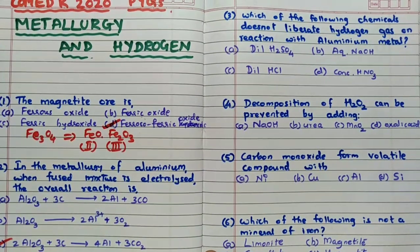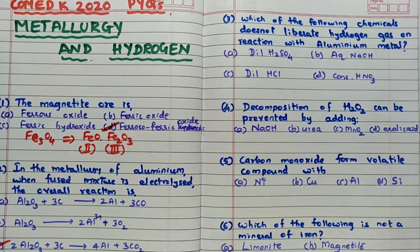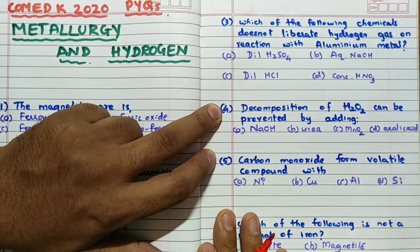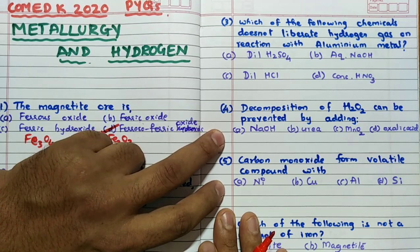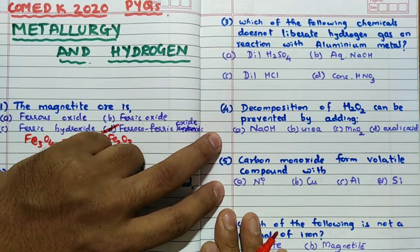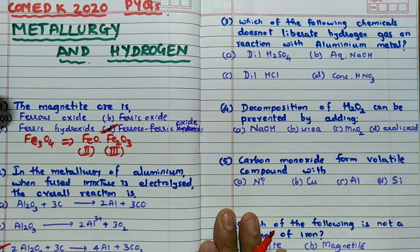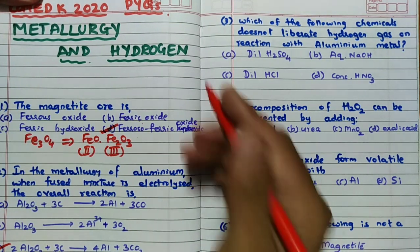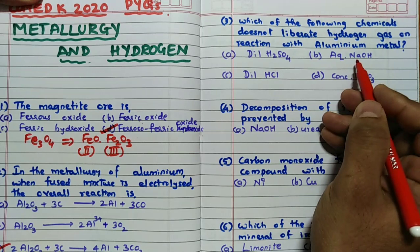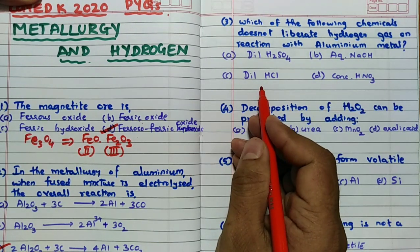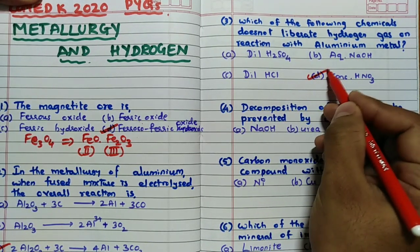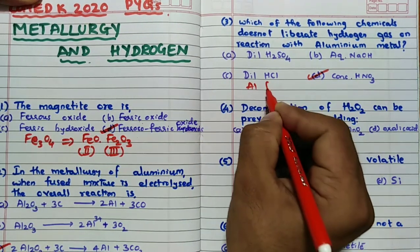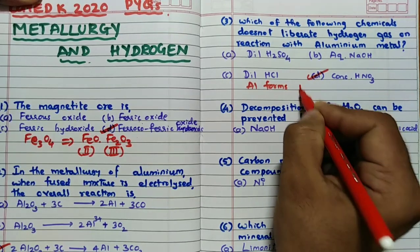Third question which of the following chemicals does not liberate hydrogen gas on reaction with aluminum metal. Aluminum metal is amphoteric in nature, amphoteric means it will react with both acid as well as base to liberate hydrogen gas. Hence dilute H2SO4 it can liberate, NaOH also it can liberate, HCl also it can liberate.